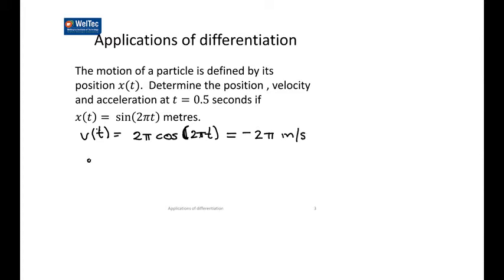Now find the acceleration. The acceleration function will be 2π times 2π, which is 4π squared. The derivative of cos is negative, so put that on the front: negative 4π² sin(2πt). We have to find that when t is a half — sine of π is just going to be zero. And that's fine.